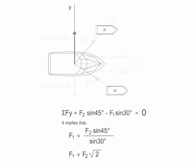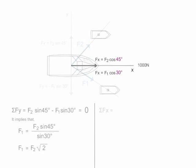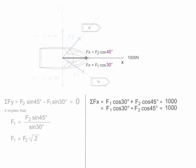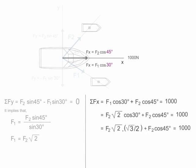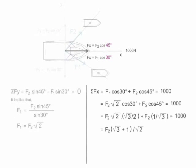Thus the resultant force 1000 Newton is along x axis. Therefore we can write Fx as shown. In this equation we will substitute the value of F1, and thus by simplifying it we get the value of F2 and finally F1.